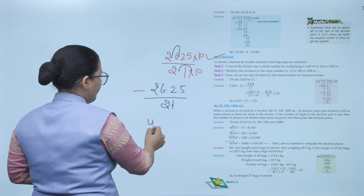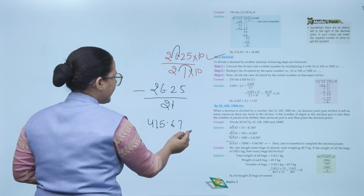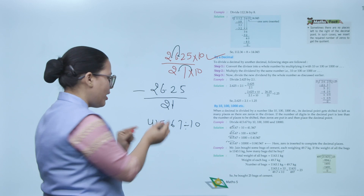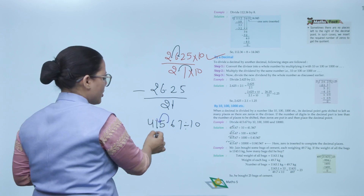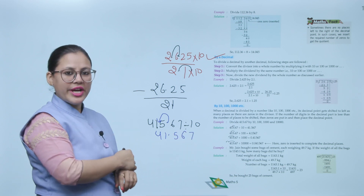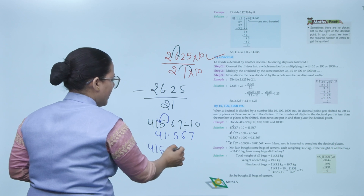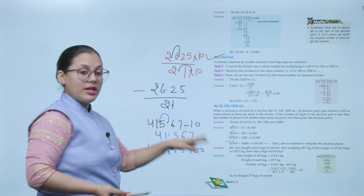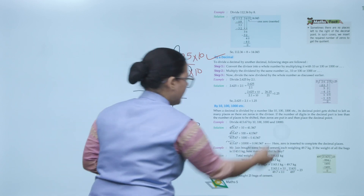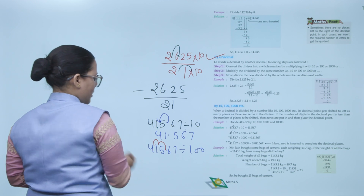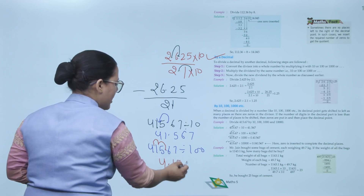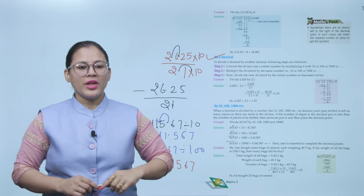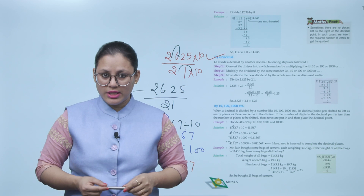Example: 415.67 ÷ 10 — shift the decimal one place to the left — answer is 41.567. For 415.67 ÷ 100 — shift two places to the left: one, two — answer is 4.1567. For ÷ 1000 — shift three places to the left.